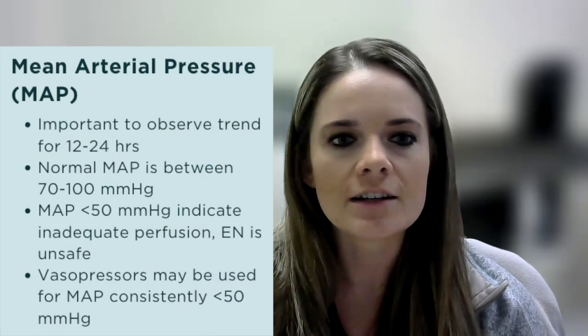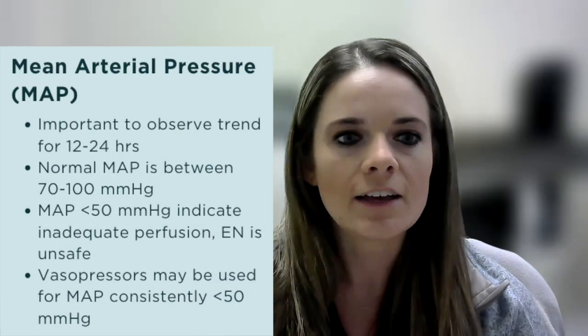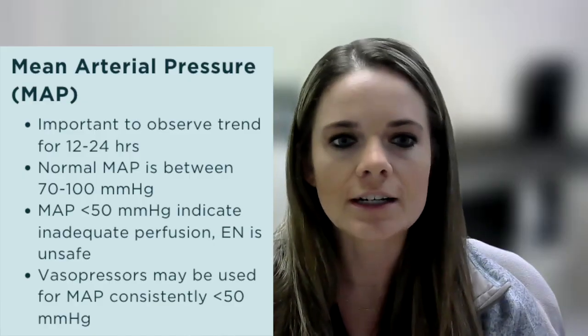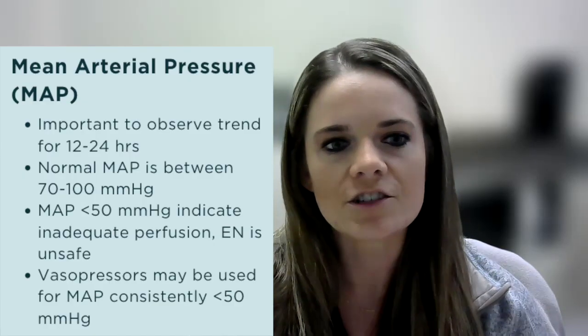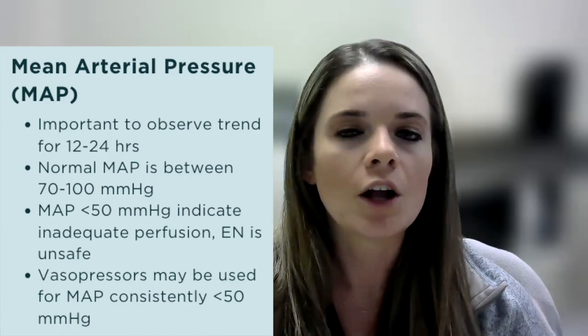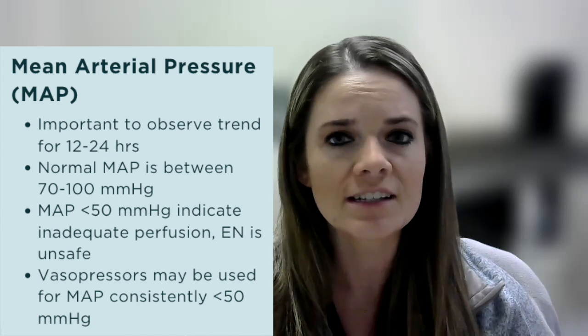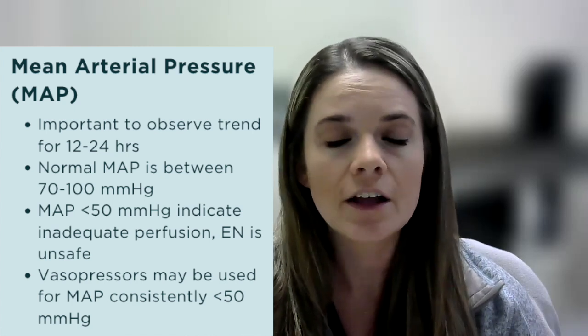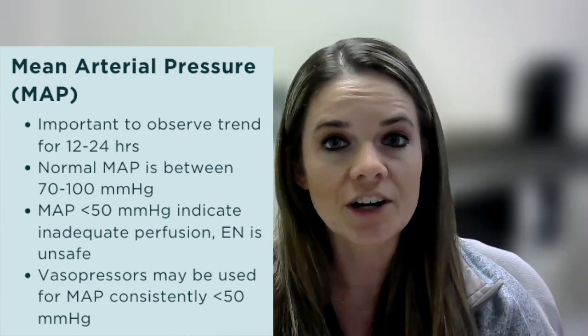MAPs are important to trend over the course of at least 12 to 24 hours. If a patient's mean arterial pressure is consistently less than 50, it is not safe to deliver tube feeding as their GI tract is not being well perfused with blood. A normal MAP is generally anywhere between 70 and 100. If a patient consistently has MAPs below 50, they're usually on vasopressors to keep their blood pressure elevated.